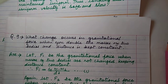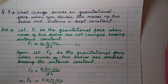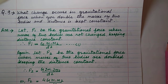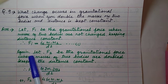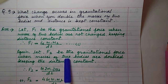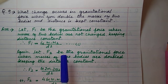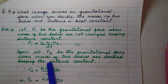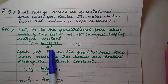What change occurs in gravitational force when you double the masses of two bodies keeping distance constant? Let F₁ be the gravitational force when masses and distance are unchanged: F₁ = Gm₁m₂/d². In the next case, let F₂ be the gravitational force when masses of both bodies are doubled, keeping distance constant.